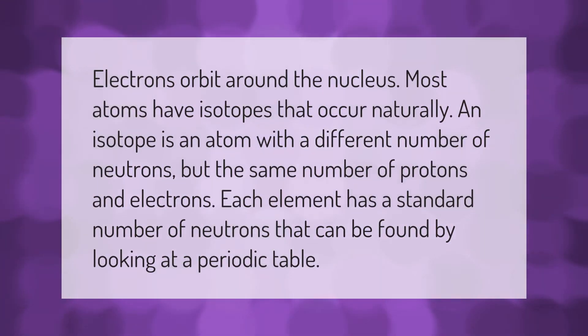Electrons orbit around the nucleus. Most atoms have isotopes that occur naturally. An isotope is an atom with a different number of neutrons but the same number of protons and electrons. Each element has a standard number of neutrons that can be found by looking at a periodic table.